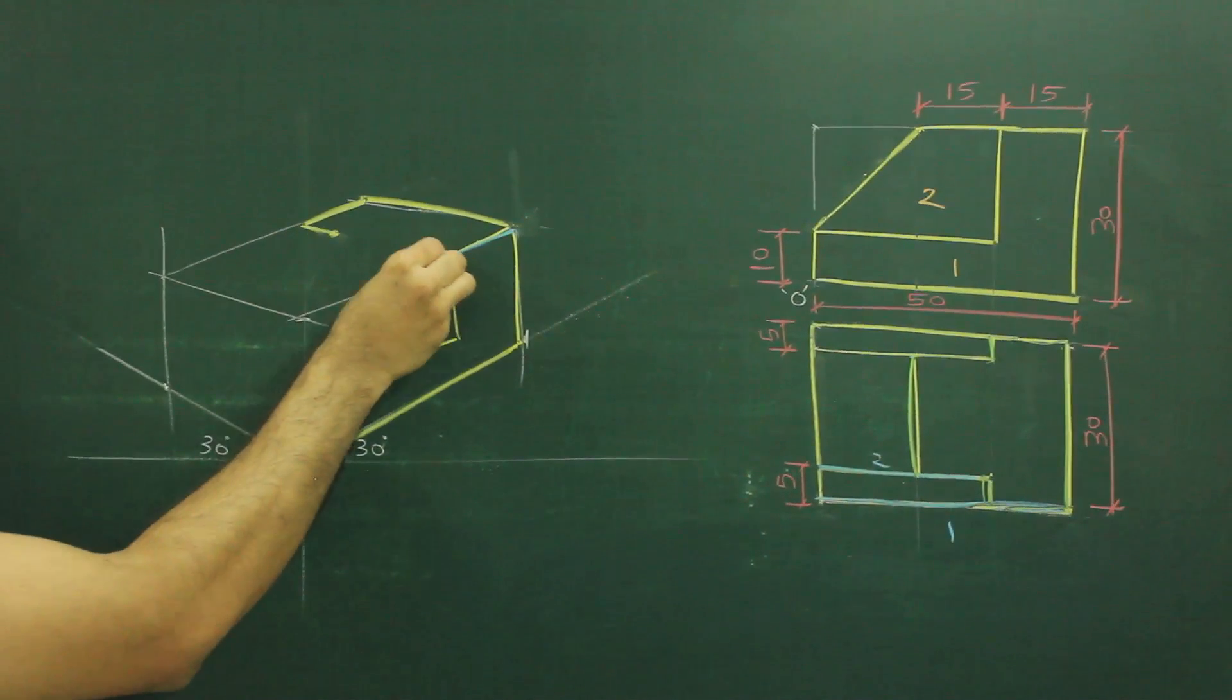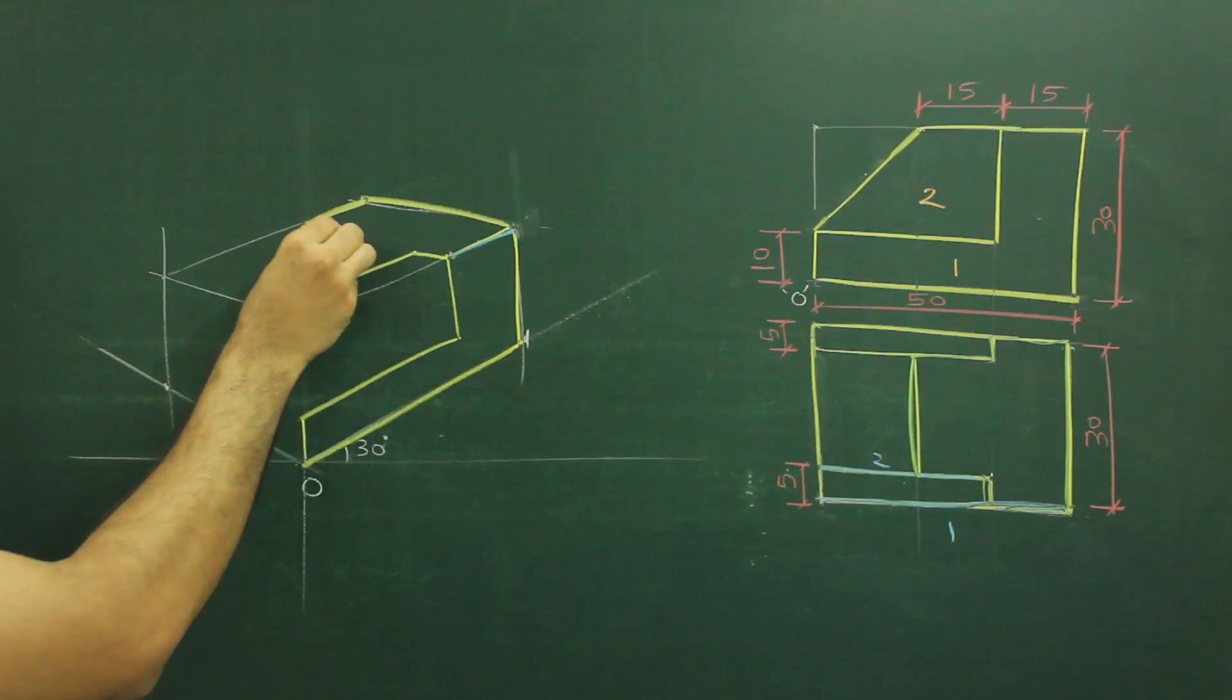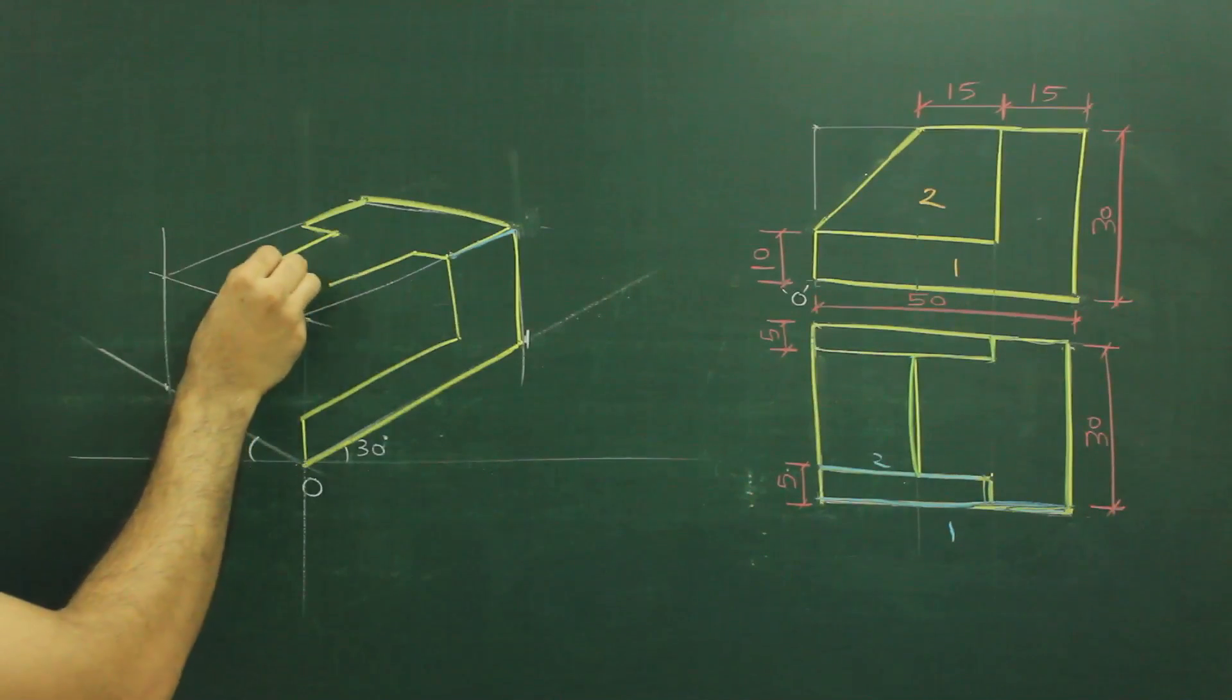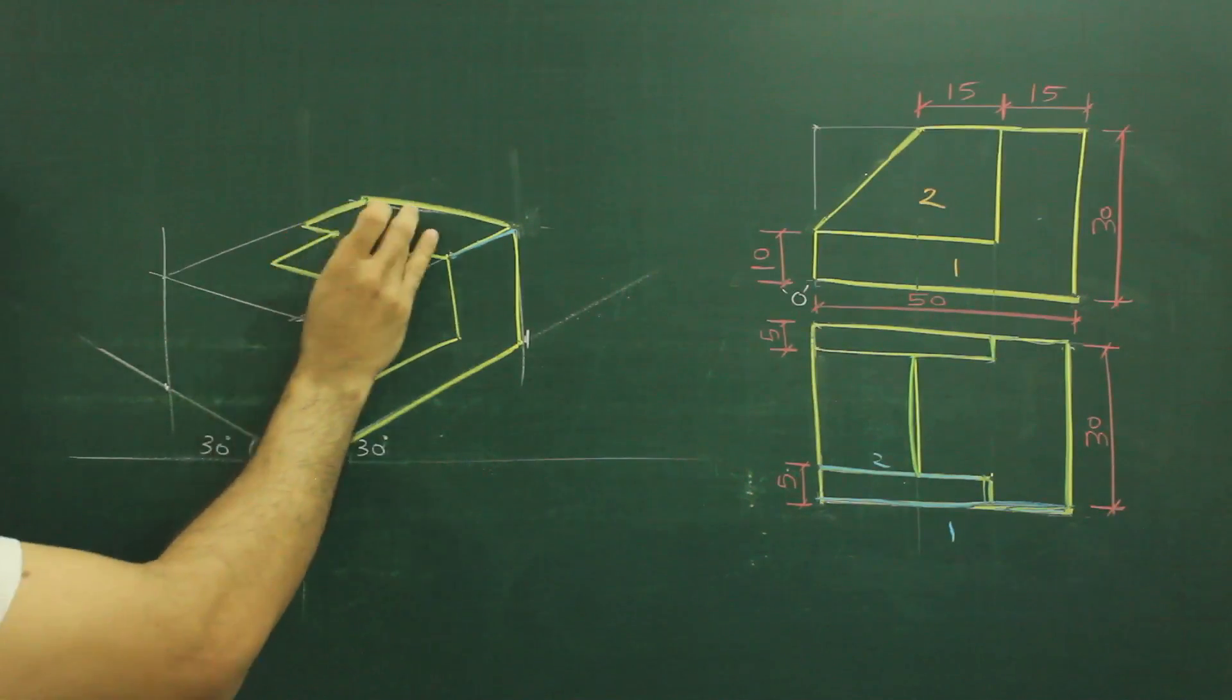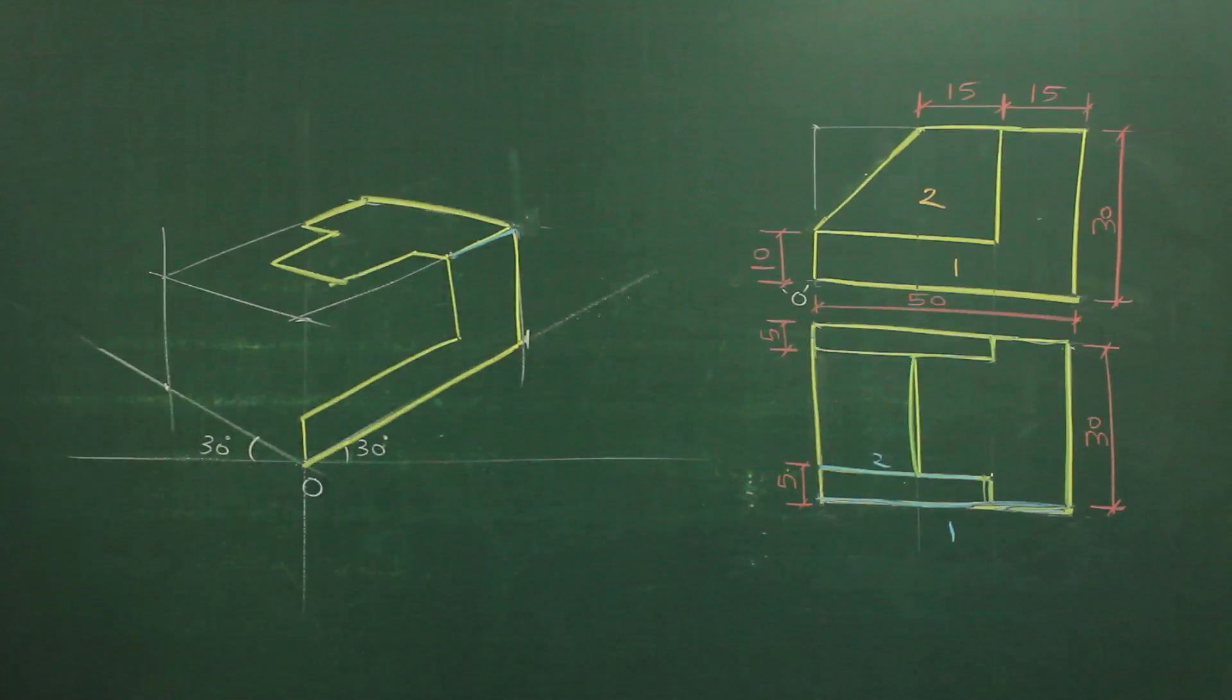So I can draw that. I can draw 5 from behind, 5 from ahead. I can again go inside by 15, 15. And I can join this. So I got this part, which is in top view.